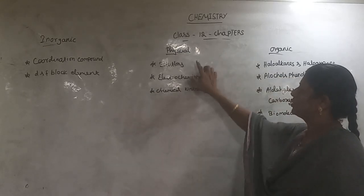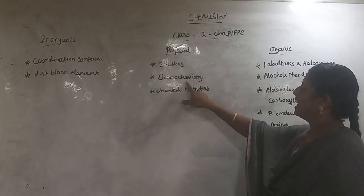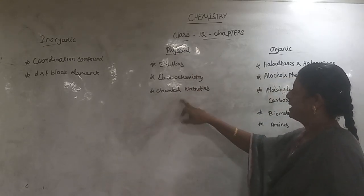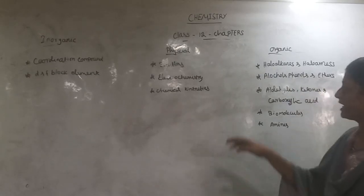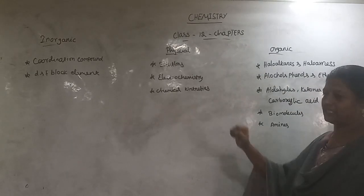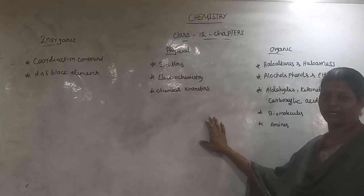The physical chemistry chapters include: solutions, electrochemistry, and chemical characteristics. Electrochemistry and chemical characteristics are part of physical chemistry.